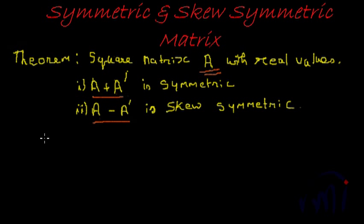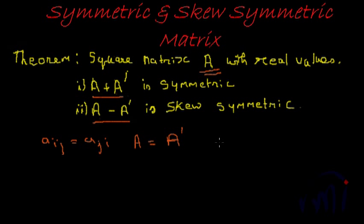Since in a symmetric matrix A_ij is equal to A_ji, then A would be equal to A transpose, because when we do a transpose, we only flip the position of the non-diagonal elements. Because the non-diagonal elements are equal in a symmetric matrix, A would be equal to A transpose. Now, let us see if we can prove this. Suppose A plus A transpose is B — adding two matrices gives one matrix B.